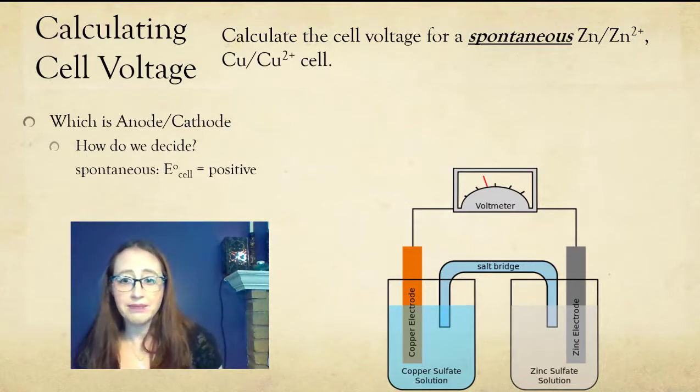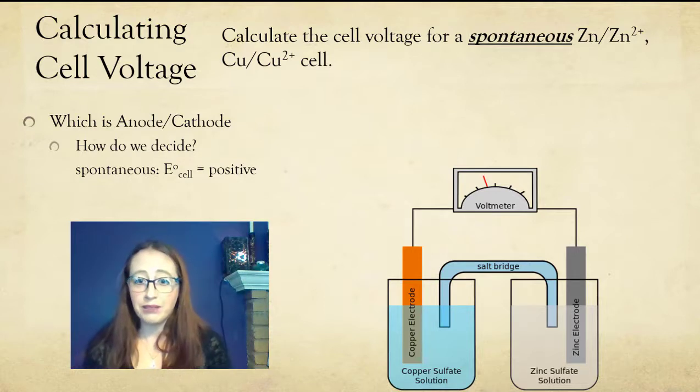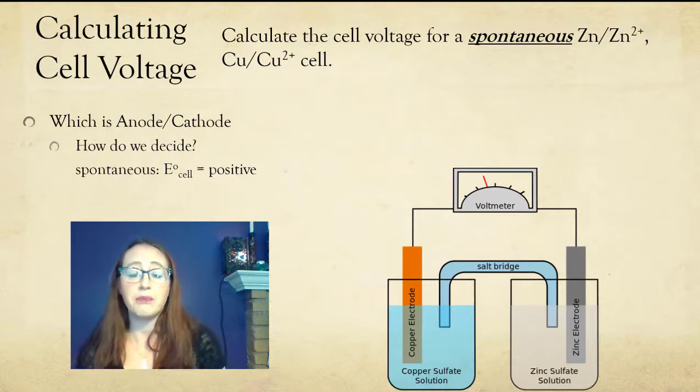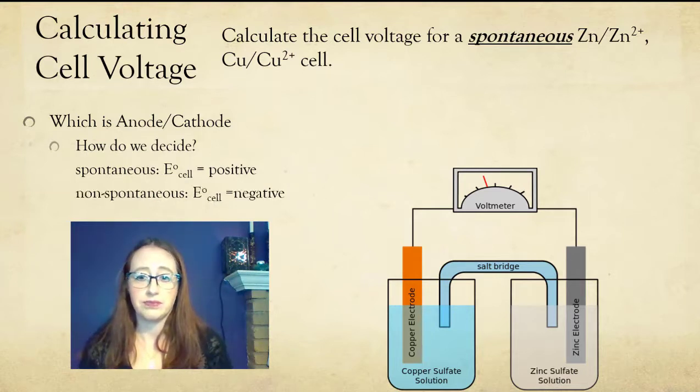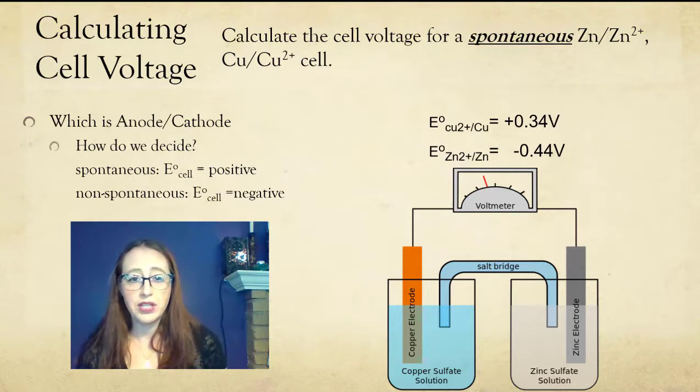And how do we know this? Well, we can look at the reduction potentials from a table, and decide which one must be the anode and which one must be the cathode, in order to give us this positive voltage. So we need to determine how to combine these two reduction potentials in a way which gives us a positive voltage.